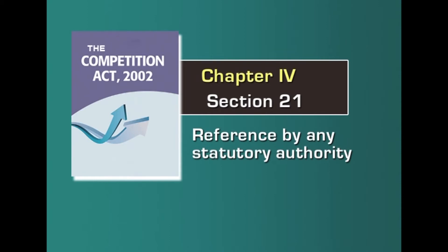The language of Section 21 is very clear. It provides a provision for statutory authorities to refer any identified issues which contravene the provisions of this act for the commission to adjudicate. Once such a reference is received from any statutory authority, the commission shall give its opinion within 60 days from the date of receipt. There is then a statutory obligation on the statutory body to consider the commission's opinion and pass appropriate orders. This is the substance of Section 21.